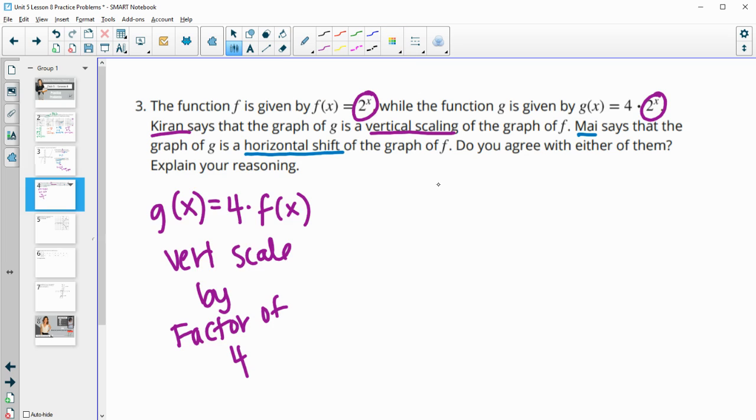Mai takes an interesting look at it because she looks at the 4 and sees that it's a base 2. So we have 2 to the x here and 4 we could write as 2 squared so that it's the same base as this 2 to the x. When we have powers of the same base we can just add them.